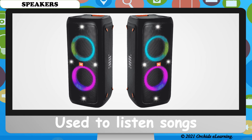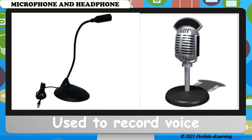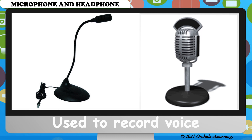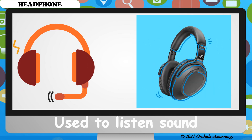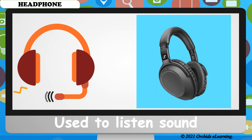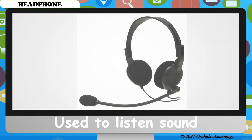Speakers are used to hear sound effects or listen to music on the computer. A microphone is used to record different sounds into the computer — it is also known as a mic. Headphones are used when you want to listen to something without disturbing the people around you. These days, headphones come with an attached microphone.